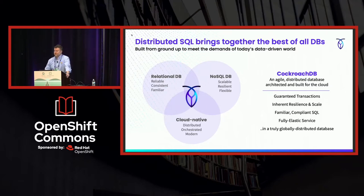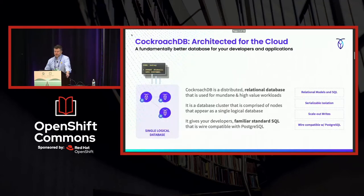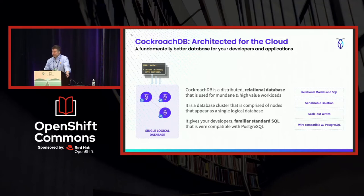We are a database architected to scale out rather than scale up. When you need more capacity, you add more nodes to your cluster. This is not too dissimilar to Kubernetes, so it's probably not surprising to folks in this room that we run well in OpenShift. We've presented a familiar SQL interface based on the Postgres wire protocol, so your applications can connect to CockroachDB just like they can connect to any Postgres database.